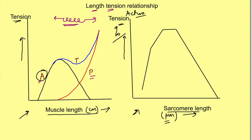As muscle length increases, the active tension increases. But after a certain length, active tension starts decreasing. Generally, our muscle length in a resting state is somewhere in the middle of this curve. So when we stretch the muscle — that is, increase its length — the active tension and force of contraction increases. But if you stretch the muscle too much, then the force of contraction will decrease.